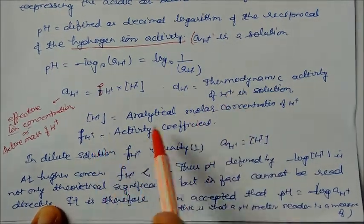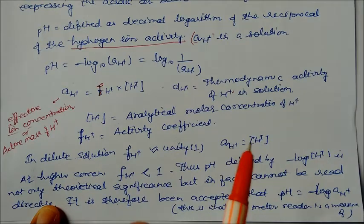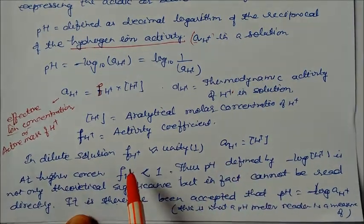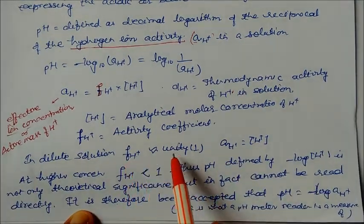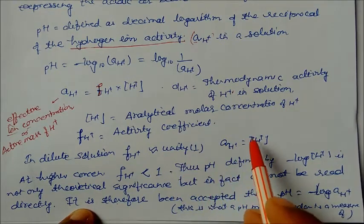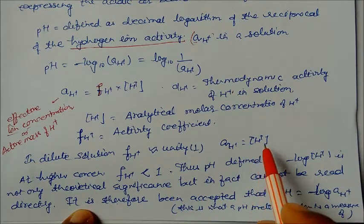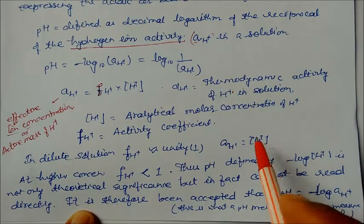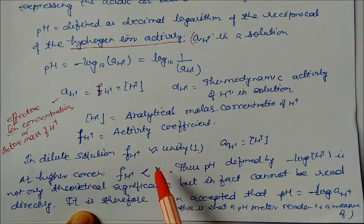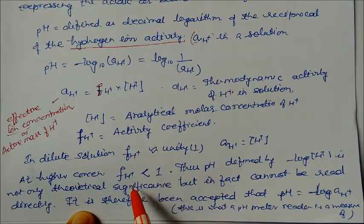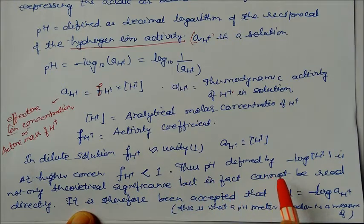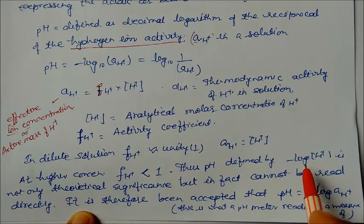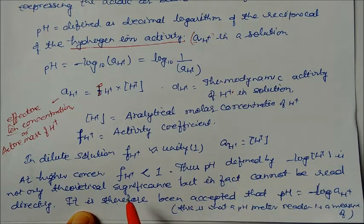In dilute conditions, the activity coefficient is equal to 1, so this becomes equal to total concentration of H+. But if you take higher concentration, the activity coefficient will be less than 1. In this case, the pH defined by -log[H+] has only theoretical significance.